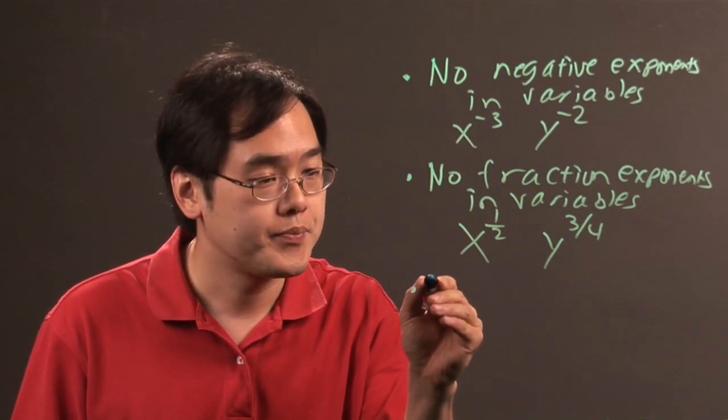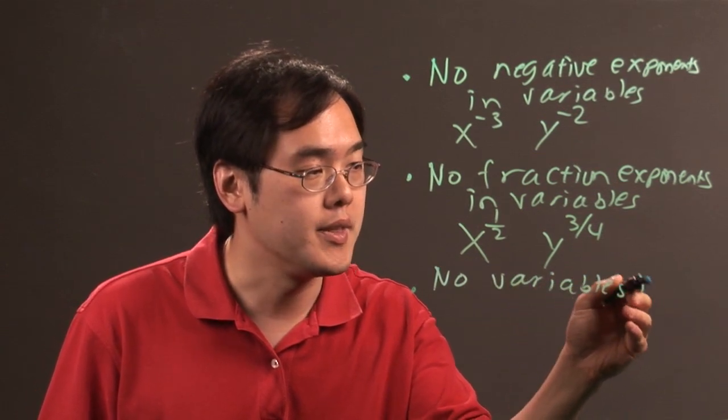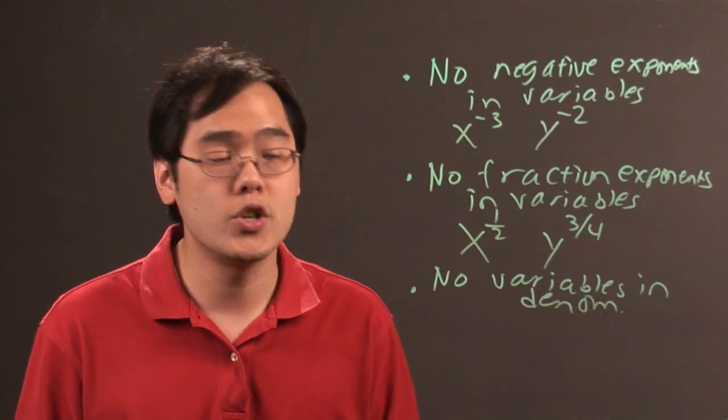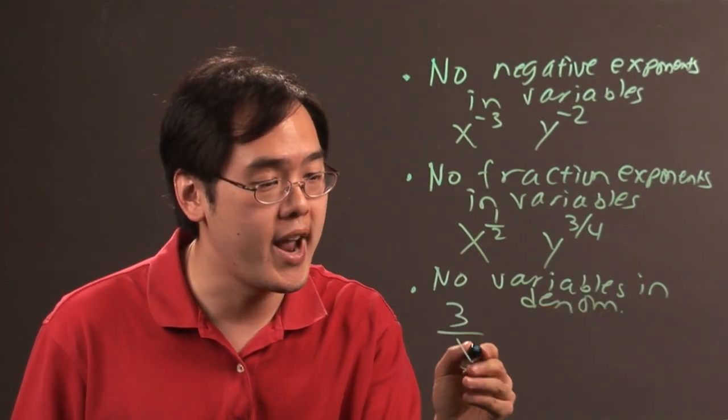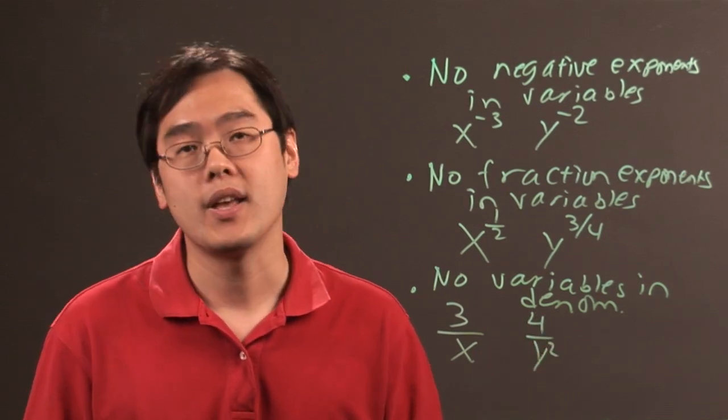And lastly, you cannot have any variables in the denominator. Otherwise, you're not going to have a polynomial. So in other words, you cannot have anything like 3 over x or 4 over y squared. That's not possible.